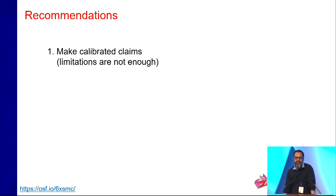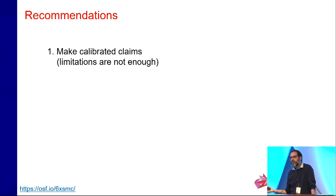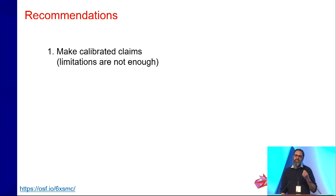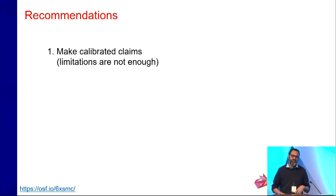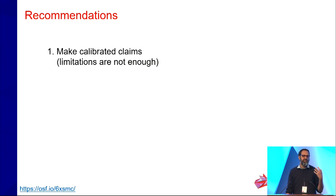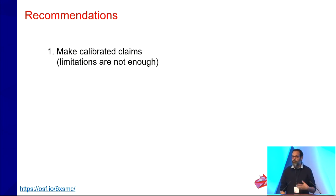So what do we do? Two solutions. The first is quite simple: make calibrated claims. Instead of saying 'genetic associations in 1.1 million people,' say '1.1 million European heritage people.' Just add a clause indicating who the sample is. Importantly, this is different from just putting a statement in the limitation section. Beth Clark has a nice study on the content and function of limitation sections — when something is identified as a limitation, it signals it's important but not so important we need to change our procedures. Making calibrated claims costs nothing except divesting from a strong belief in universalism.